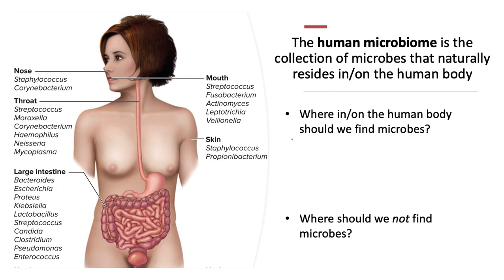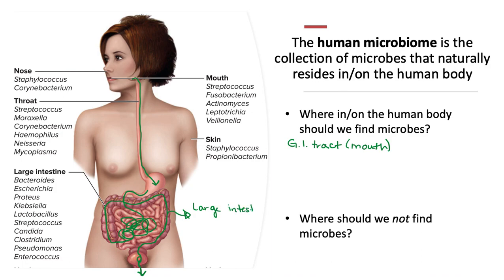Where we have the most microbes is our digestive tract or GI tract — everything from the mouth to the anus. So we've got the mouth, the pharynx, the esophagus going down to the stomach, which leads to the small intestines. The small intestine leads to the large intestine, which empties into the rectum. Most of our microbes are found in the large intestine — the most dense area — at about 10 to the 14, which is about a trillion.